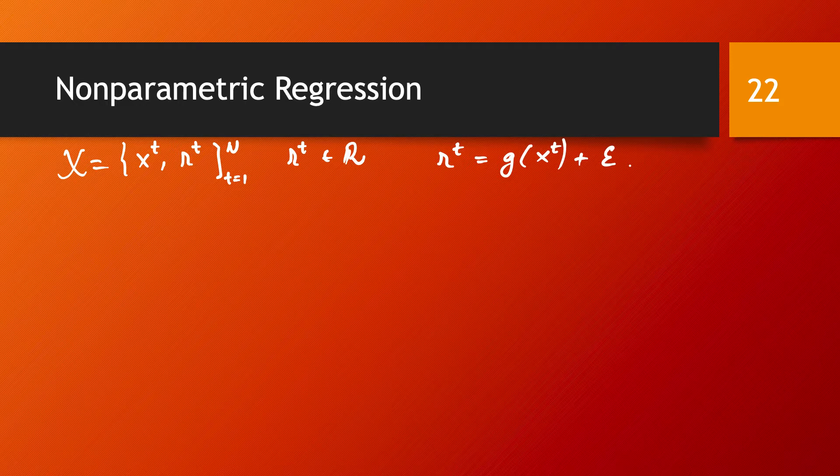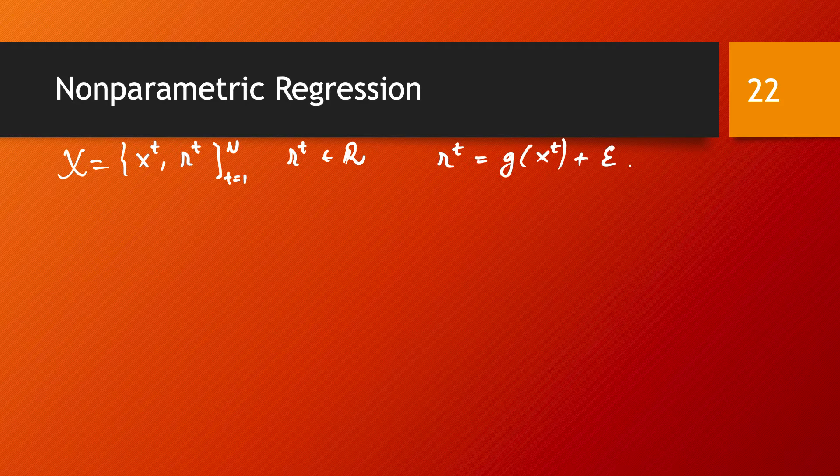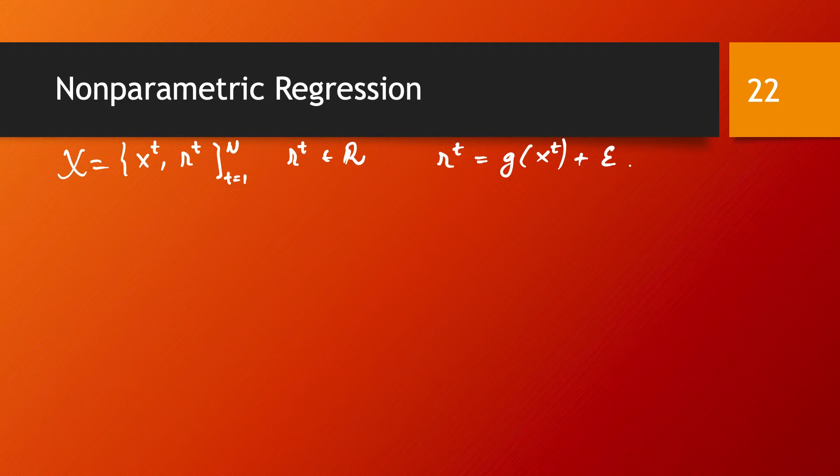Now, we take the nonparametric regression when we have no basis on which to assume the existence of such a polynomial, and the only reasonable thing that we can assume is that close X are going to have close G values.